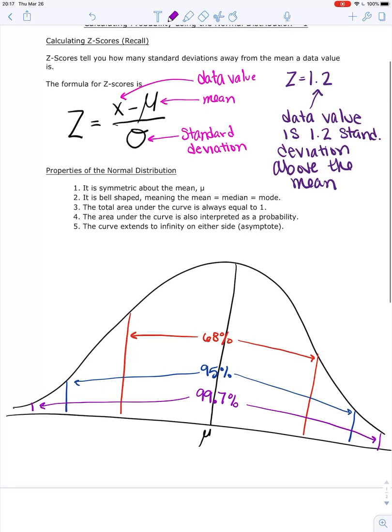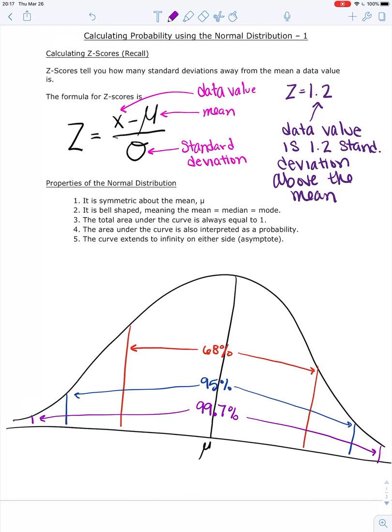So that's the background information that we need in order to calculate probability with the normal distribution.